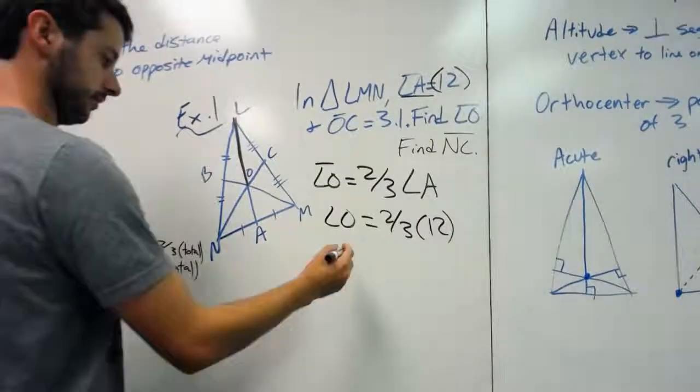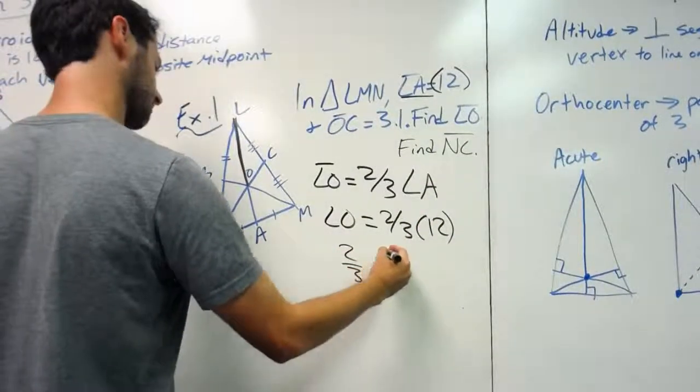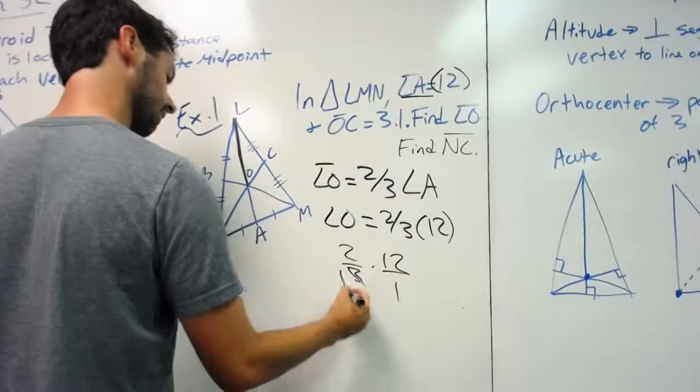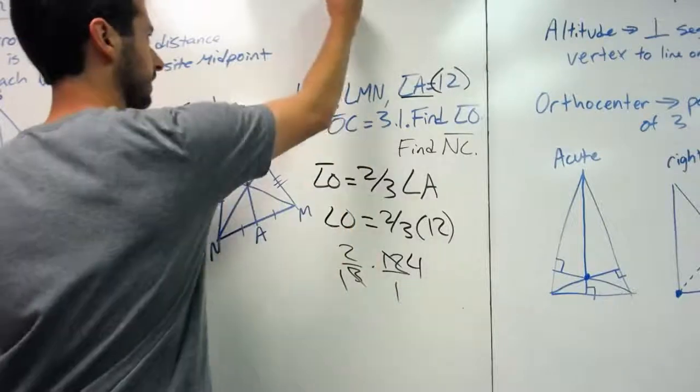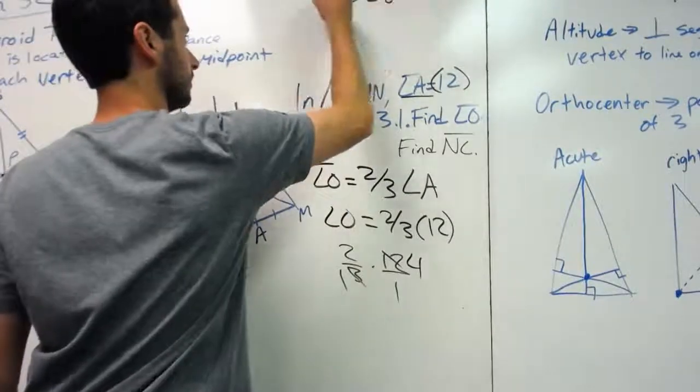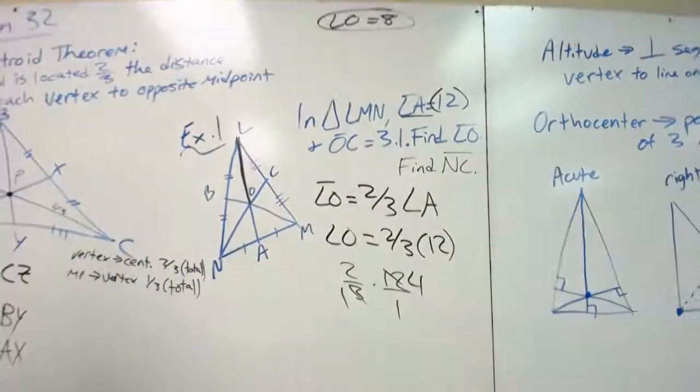All right. When we do two-thirds times 12, we cancel. And we get LO equals eight. LO equals eight.